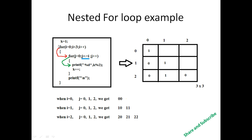Now I show an even/odd pattern. When k equals 1 — 1 is an odd number; 2 is an even number; 3 is odd; 4 is even. In this way we can print the pattern 1, 0, 1, 0, 1, 0 representing odd and even values.